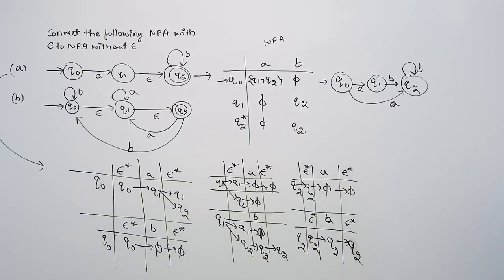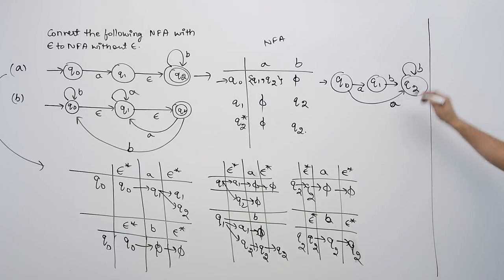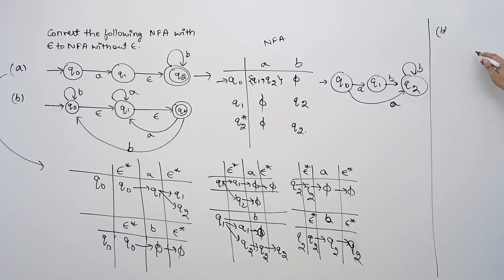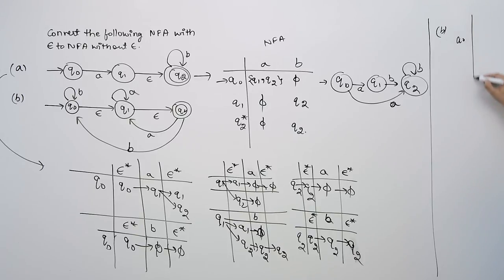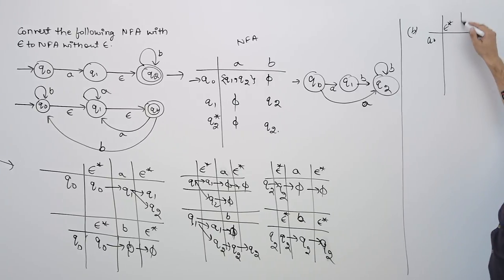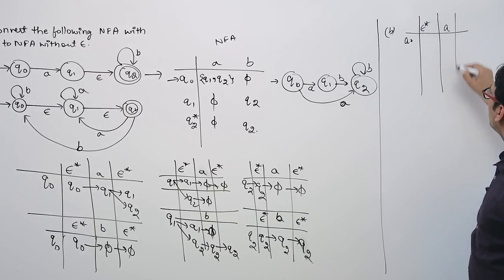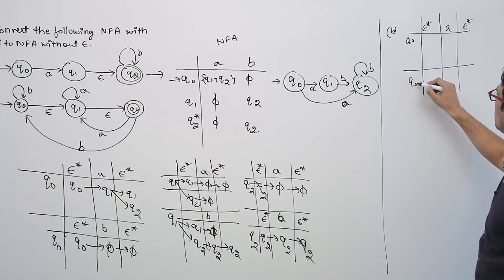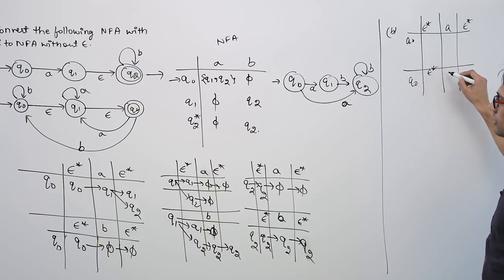Now for the second case, we have three states Q0, Q1, and Q2. The method is: first find the epsilon closure, then make a transition for symbol A, then find epsilon closure again. Then for symbol B: find epsilon closure, make the transition, then find epsilon closure again.